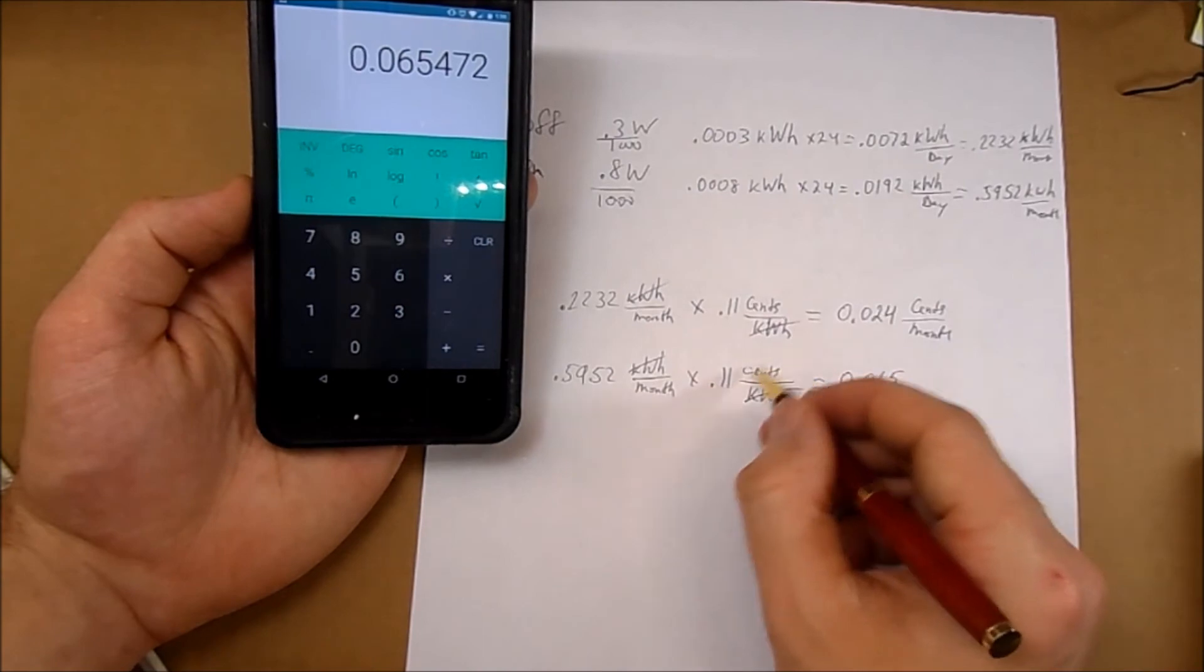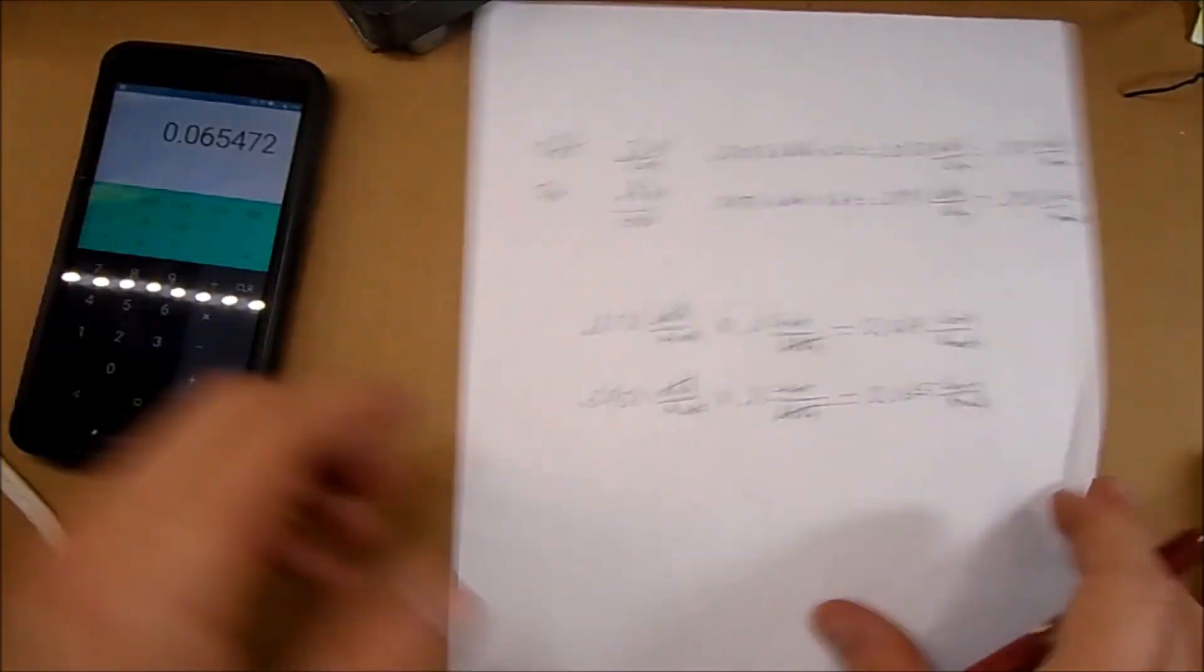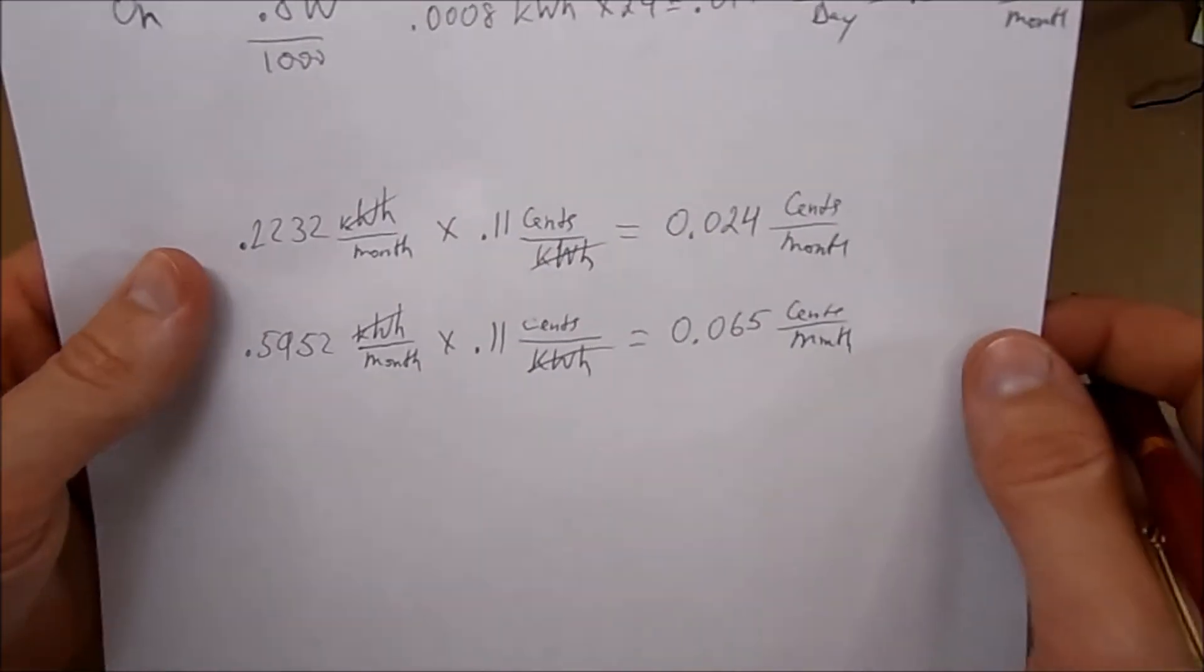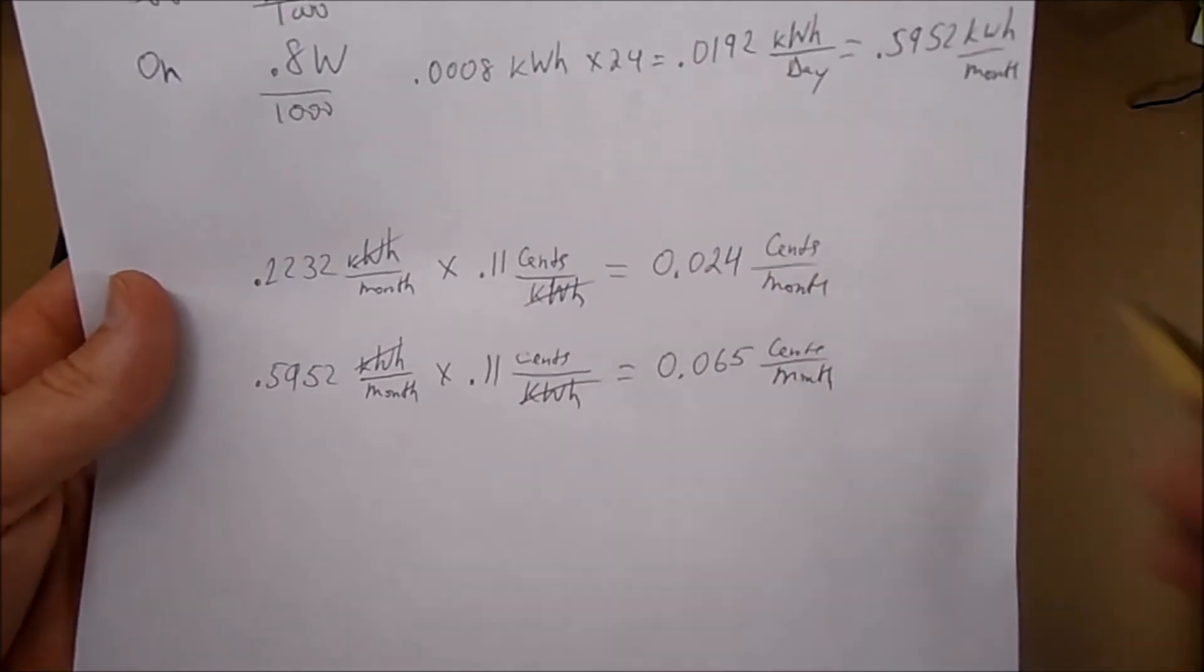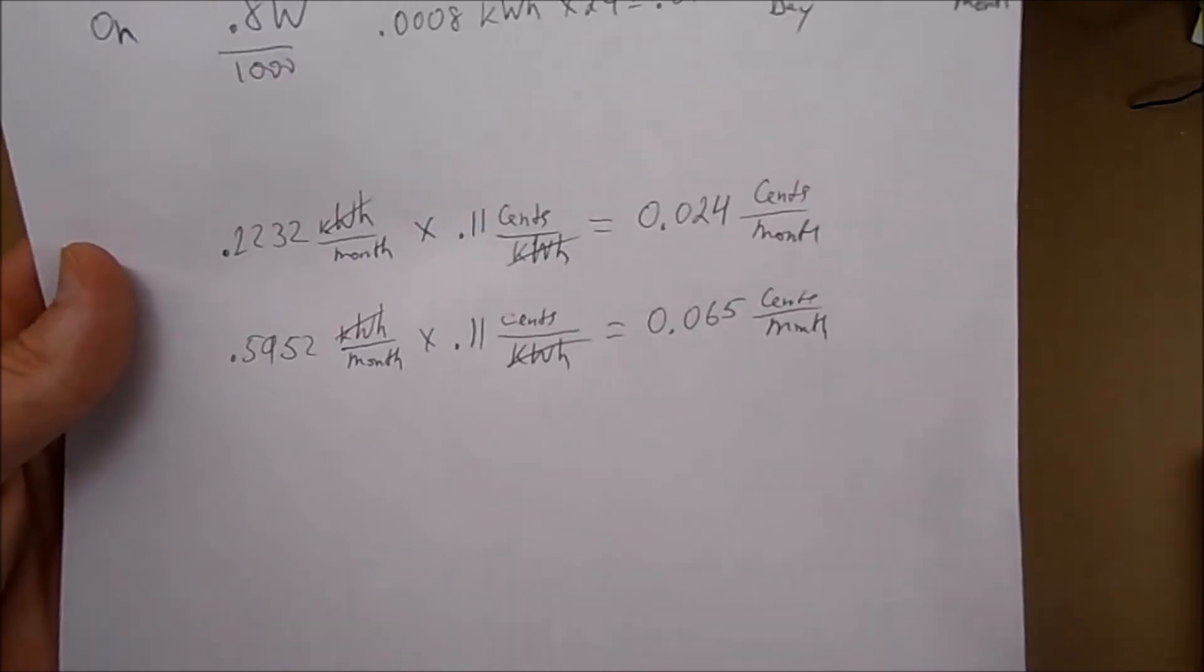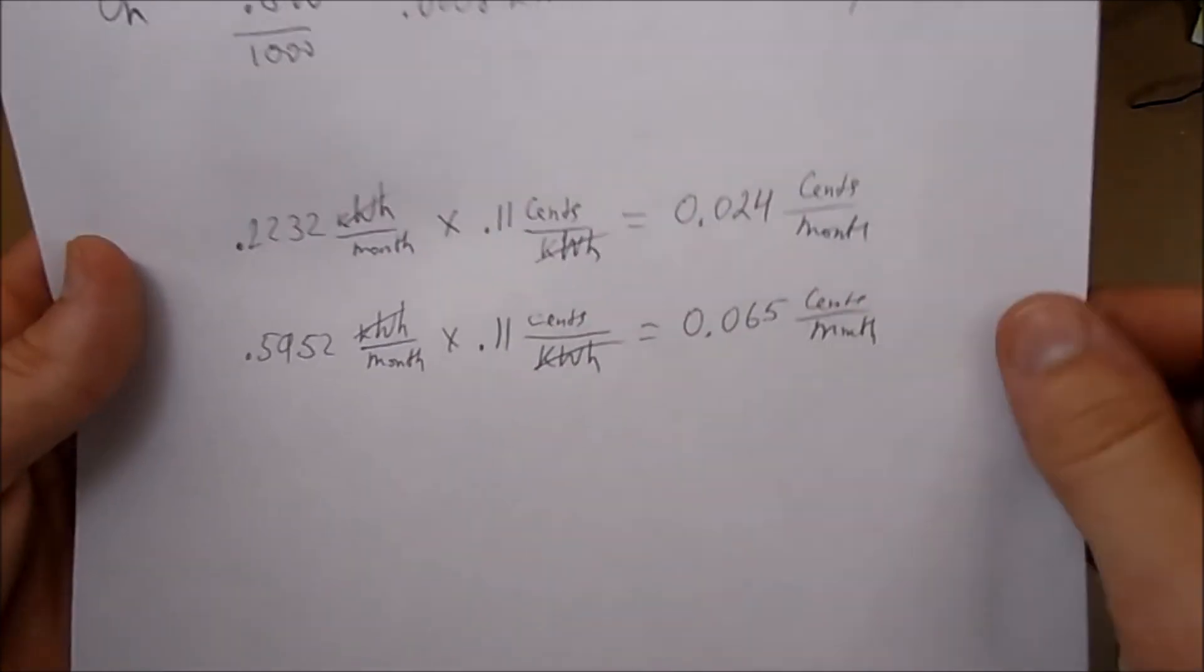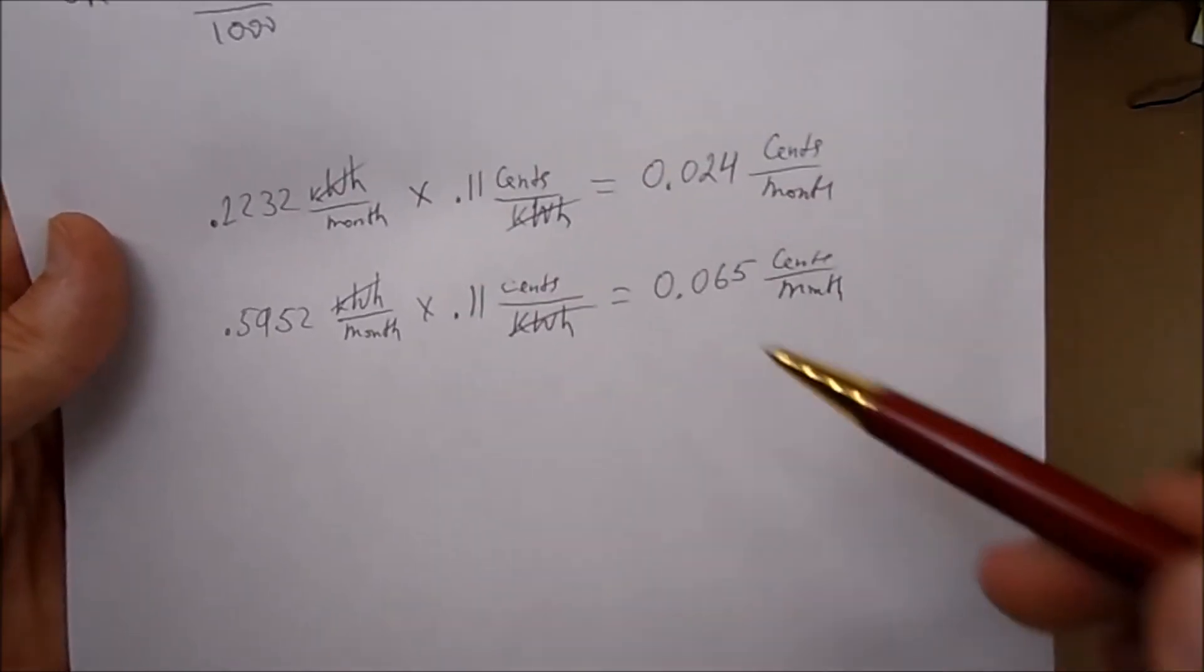Okay, so the Sonoff would cost you 2 cents per month if it's left plugged into your outlet, and it's going to cost you 6 cents a month if it's plugged into the outlet and it's on 24/7 for a whole month. It would cost you 6 cents.